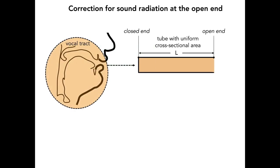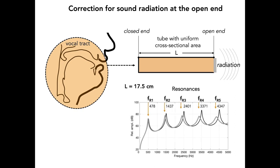The boundary condition of zero pressure at the open end of the tube is an idealization. In reality, the section of air and vibration at the lips transmits a small amount of acoustic energy that radiates outward away from the end of the tube. While typically far less than 1% of the total energy produced during speech or singing, this is the sound that is actually heard by a listener. This correction also slightly increases the effective length of the tube and results in a lowering of each resonance frequency, as can be seen in the frequency response function.